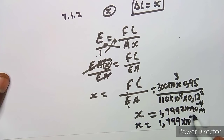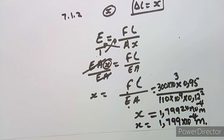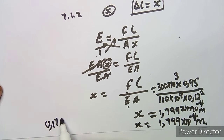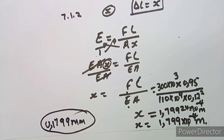That result is already in meters: 1.799 times 10 to the exponent of minus 4 meters. If you want to convert to millimeters, multiply by 1000 — that is, multiply by 10 to the exponent of 3 — which gives approximately 0.1799 millimeters. You can leave your answer in meters. That gives us the change in length.